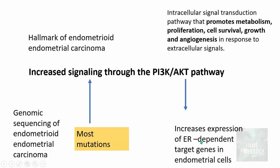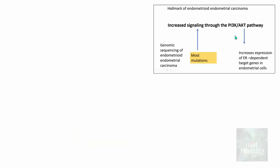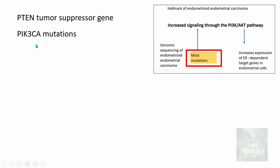With more estrogen receptors on endometrial cells and the risk factor of unopposed estrogen exposure, there is increased proliferation, increased cell survival and growth — all of which can result in the formation of malignant tumors. The most common mutations involved are PTEN tumor suppressor gene mutation, PIK3CA mutations, KRAS mutations, and ARID1A mutations.